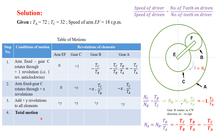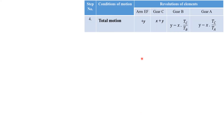Adding plus y revolutions to all elements — arm EF, gear C, gear B, and gear A. The total motion is obtained by adding Step 2 and Step 3 for each element. The results are: arm EF = y; gear C = x + y; gear B = y − x(Tc / Tb); gear A = y − x(Tc / Ta). The sign here is very important — it determines the direction of revolution.